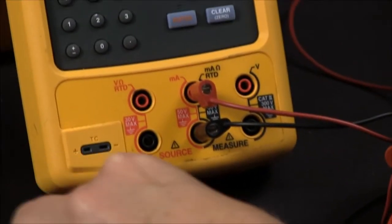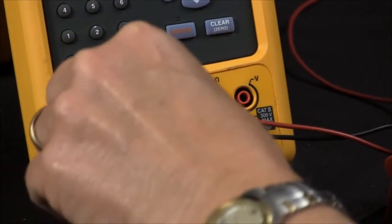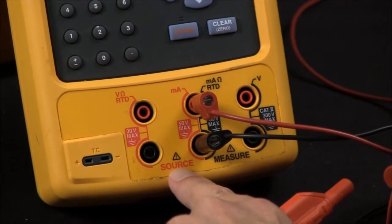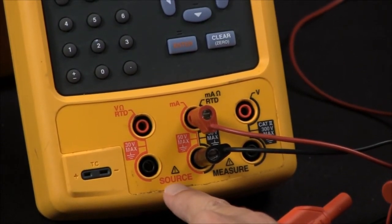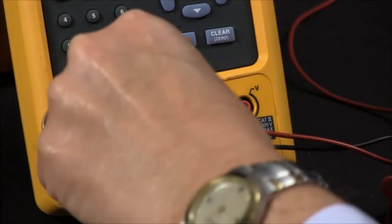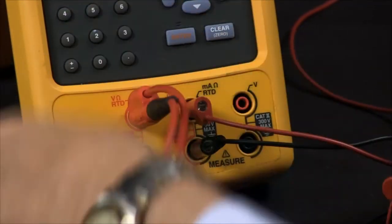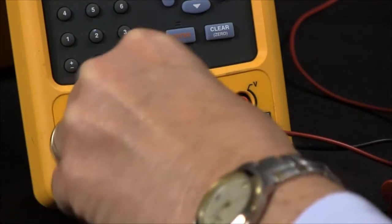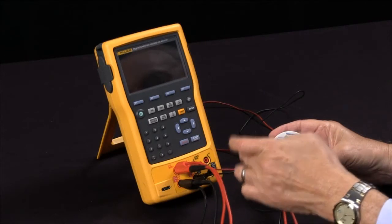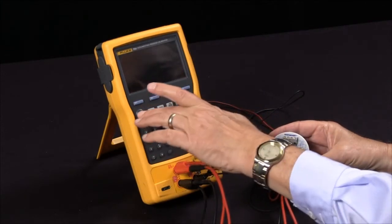Looking at the 744, everything in red is source. So we want to source RTD, so we plug our two leads in here. Our loop power connects here, and that's also where we measure our milliamps. I'll turn the unit on and we'll first go to setup and enable loop power.